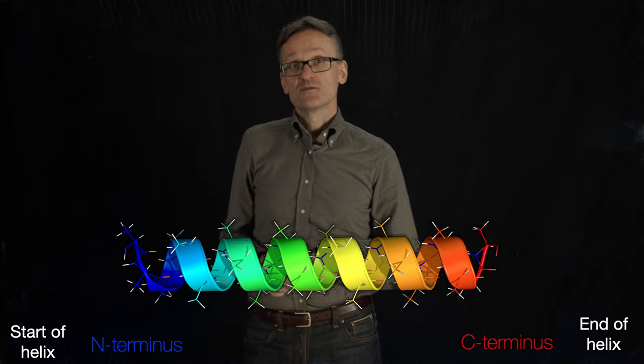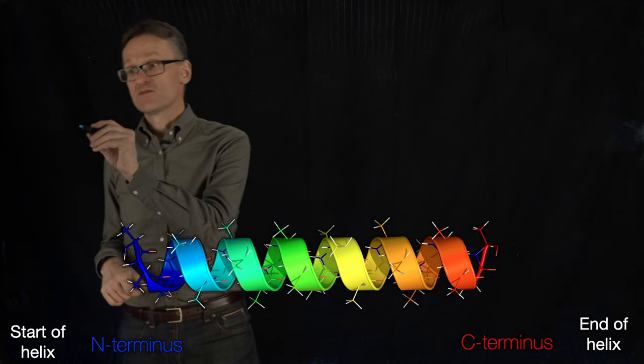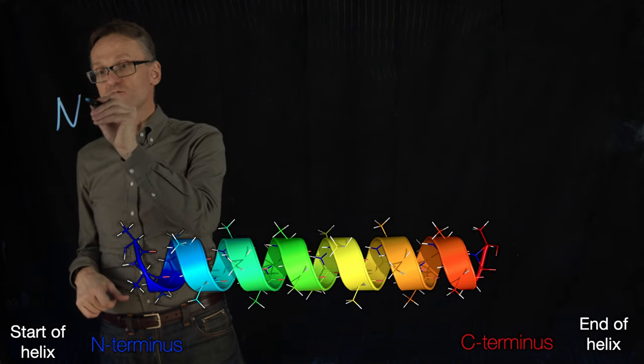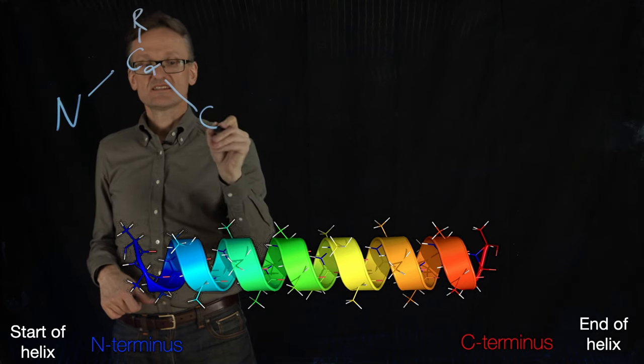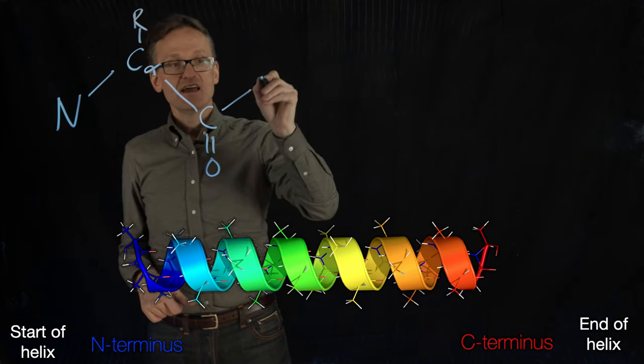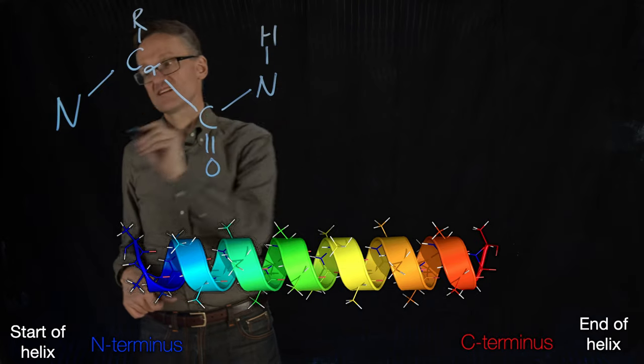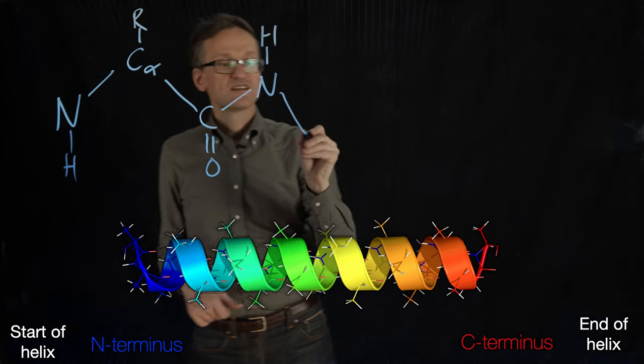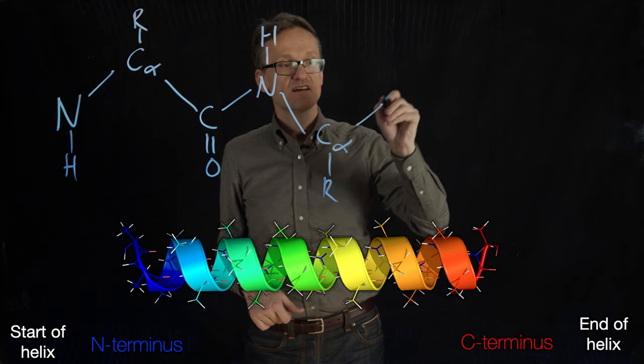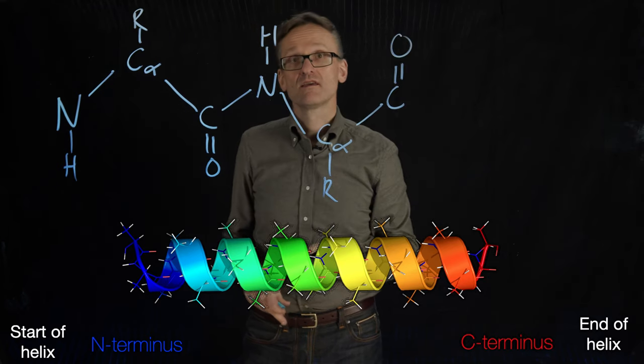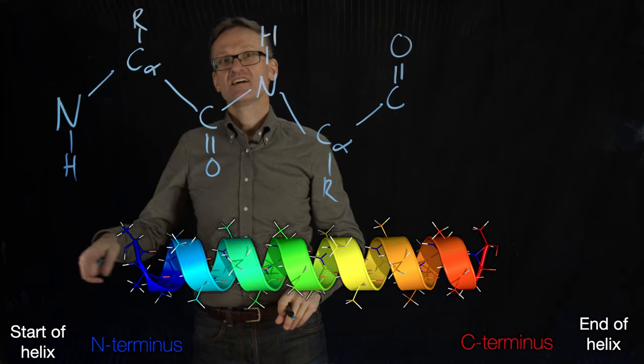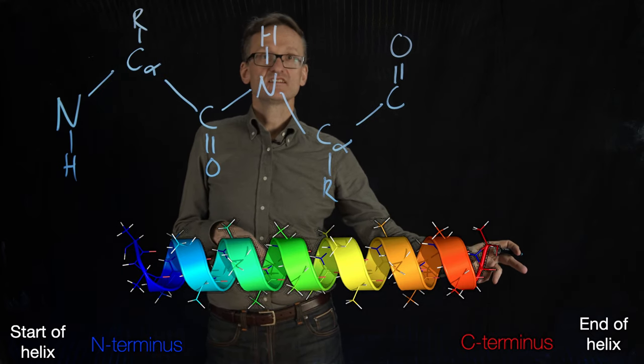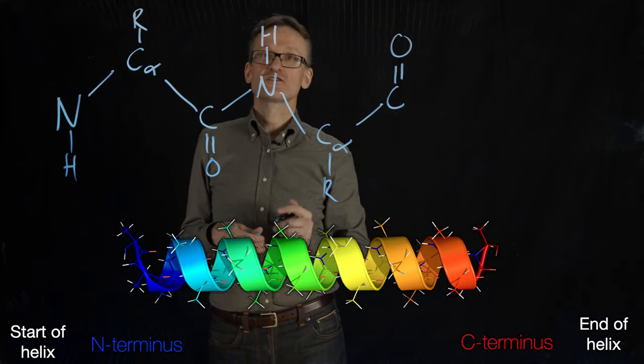Why do we call them N and C-terminus? It's actually very easy. Remember amino acids: N, C-alpha, side chain, C, and N with a hydrogen. Let's do that too: C-alpha, side chain, C. N-terminus is the start, C-terminus is the end. N-terminus blue, C-terminus red, partly because of the oxygen.